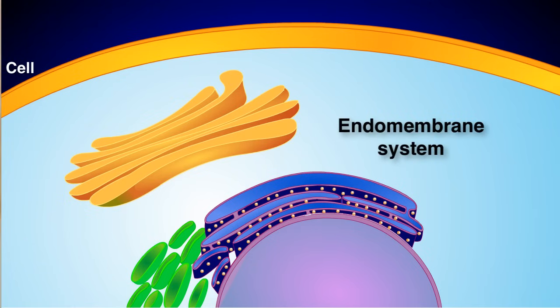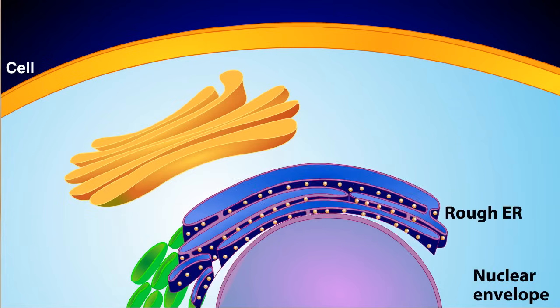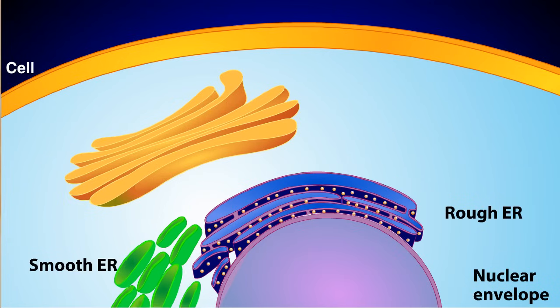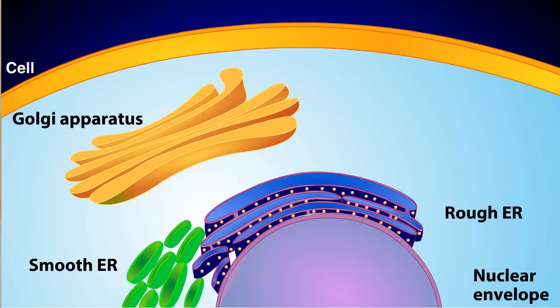The endomembrane system is a collection of membrane-based organelles that work together to create, modify, and export cell products such as proteins and lipids. It consists of the nuclear envelope, the rough and smooth endoplasmic reticulum, the Golgi apparatus, and several types of vesicles.